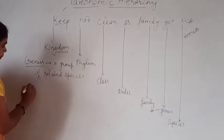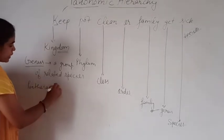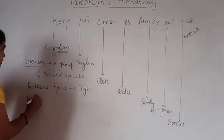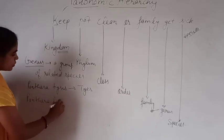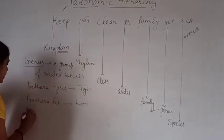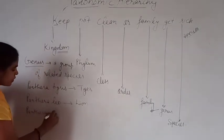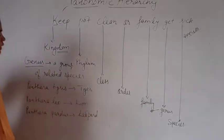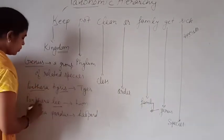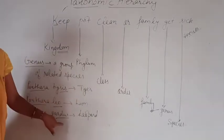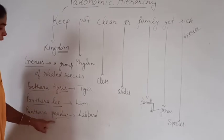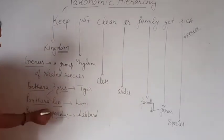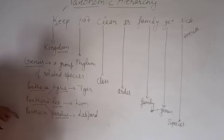For example, Panthera tigris (tiger), Panthera leo (lion), and Panthera pardus (leopard) — tigris, leo, and pardus are different species, but all three have some similar characteristics and are therefore given the same genus name: Panthera.